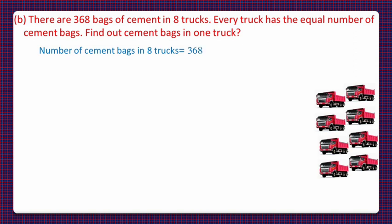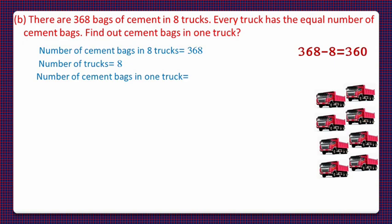Number of cement bags in 8 trucks that is equal to 368. Number of trucks that is equal to 8. And the number of cement bags in 1 truck. And for that we have to repeatedly subtract 8 from 368. And that will be a long process. So, instead of that let us divide 368 by 8.